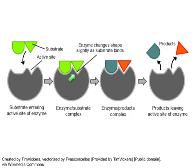Once the substrate sits in the active site, the enzyme holds the substrate, or substrates, in just the right position for a reaction to occur. In this diagram, we're looking at a reaction that breaks a chemical bond. The enzyme holds the substrate in such a way that the chemical bond — right there, see where these two halves are joined — this chemical bond is stressed. And in an instant, it breaks. Now you have two products released from the enzyme.